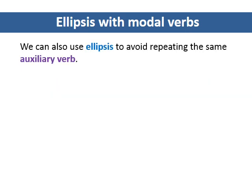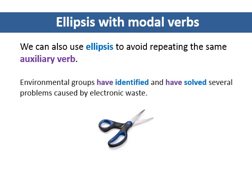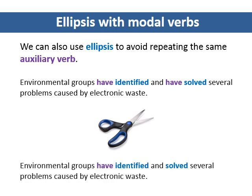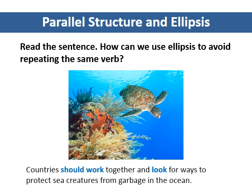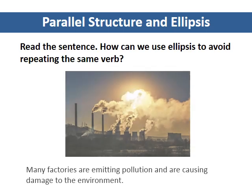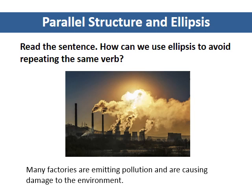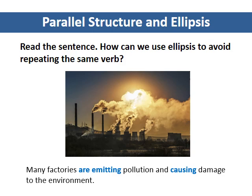We can also use ellipsis to avoid repeating the same auxiliary or helping verb. Look at this example with the present perfect — what can we remove from this sentence? Here we can leave out the second 'have,' since both main verbs have the same subject and are the same tense. Read the sentence. How can we use ellipsis to avoid repeating the same verb? Countries should work together and look for ways to protect sea creatures from garbage in the ocean. Many factories are emitting pollution and causing damage to the environment. The city has developed and implemented a brand new recycling program for the community.